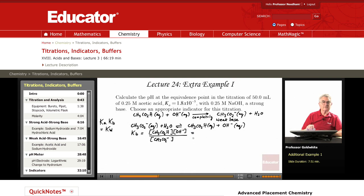So this KB in numerical value is KW over KA for acetic acid equals 1.0 times 10 to the negative 14 divided by 1.8 times 10 to the negative 5. And that equals 5.6 times 10 to the negative 10.